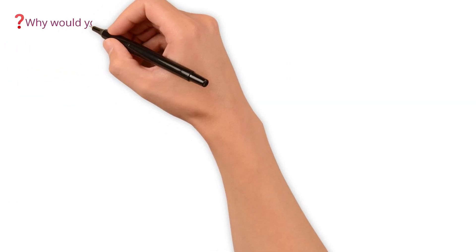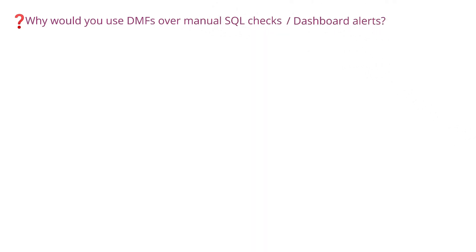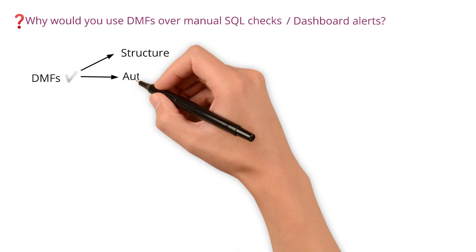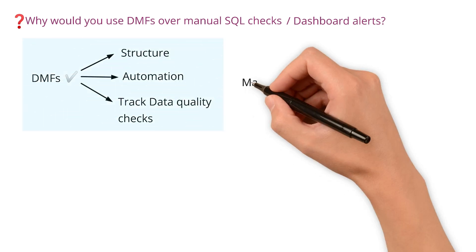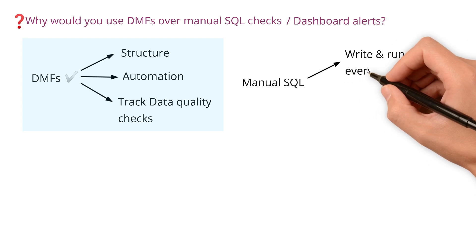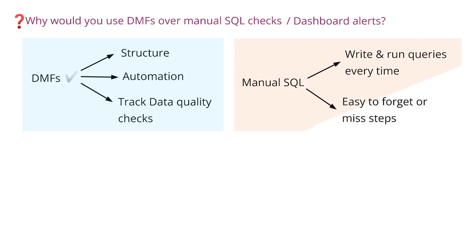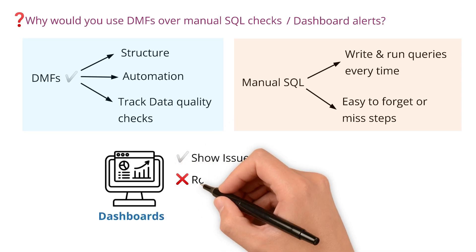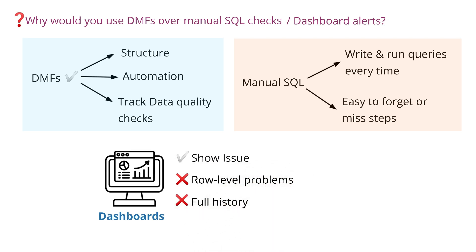Why would you use DMFs over manual SQL checks or dashboard alerts? DMFs are a better option because they bring structure, automation, and tracking into your key data quality checks. With manual SQL, someone has to write and run queries every time — it's easy to forget or miss steps. Dashboards may show issues, but they usually don't catch row-level problems and they don't store the full history of what happened.